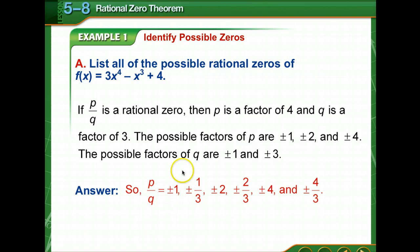p over q could be written as 1 over 1, which is plus or minus 1, or 1 over 3, or plus or minus one-third. Then we go to the next one: 2 over 1, which is plus or minus 2, or 2 over 3, plus or minus two-thirds.